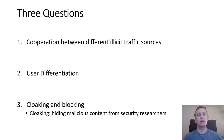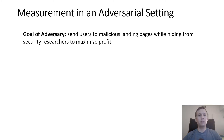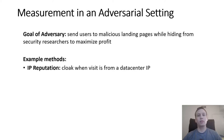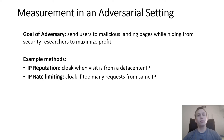While cloaking has been widely studied, we found that previous studies of illicit traffic sources and TDSs before 2016 rarely considered cloaking, and even after 2016 the vast majority of papers only considered user-agent-based cloaking. Studying traffic distribution systems is a measurement in an adversarial setting where the adversary's goal is to send users to malicious landing pages while hiding from security researchers to maximize profit. For example, a TDS would cloak their malicious activity if they see a visit coming from a data center IP or if they see too many requests from too few IP addresses.